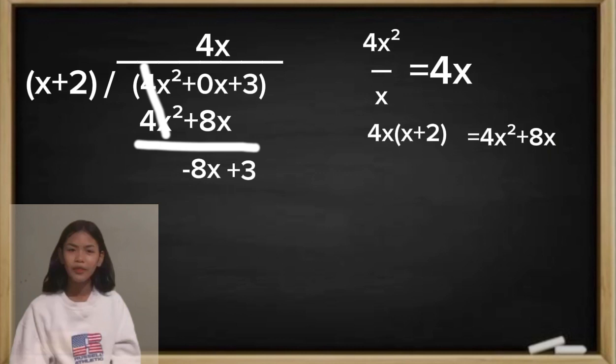Let's repeat the process. So that will become negative 8x divided by x is equal to negative 8. Our quotient is negative 8.